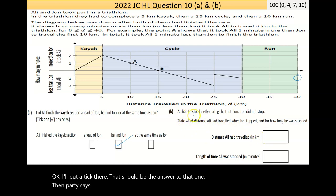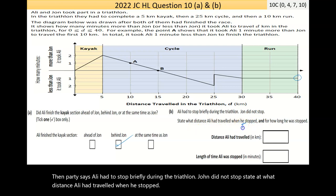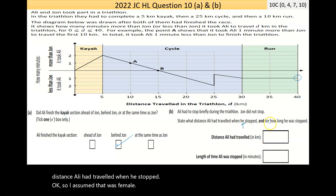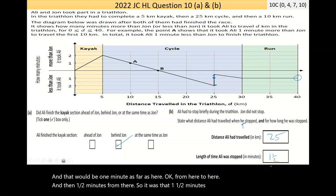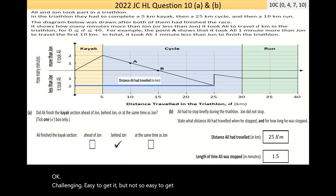Then part B says, Ali had to stop briefly during the triathlon. John did not stop. State at what distance Ali had travelled when he stopped. So I assume that was female. And for how long he was stopped. So the distance Ali had travelled, so this is where he stopped. So that's 25 kilometres. And then the length of time Ali was stopped, the time is on the y-axis, which is kind of unusual. And that would be one minute as far as here, from here to here. And then a half minutes in there. So it was one and a half minutes. Challenging. Easy to get it, but not so easy to get.